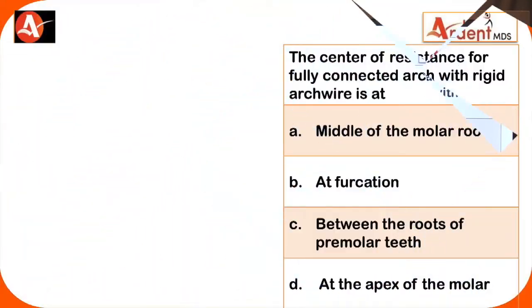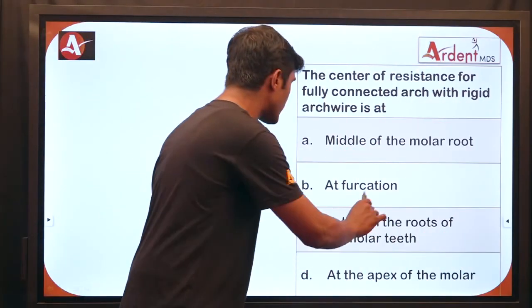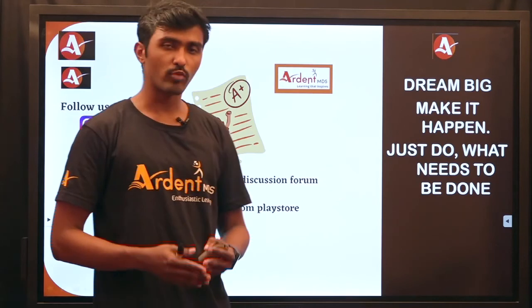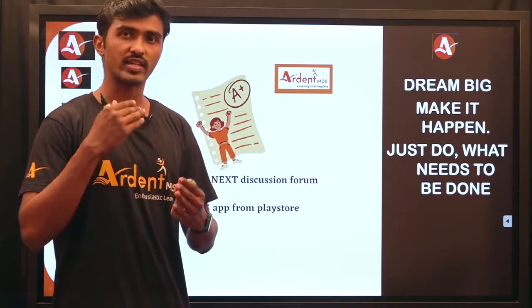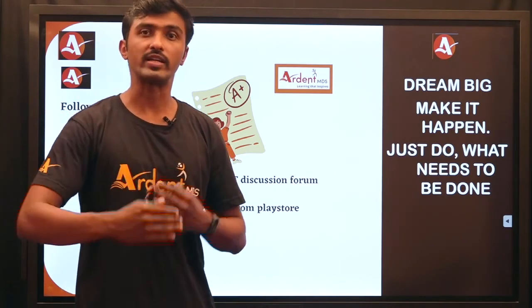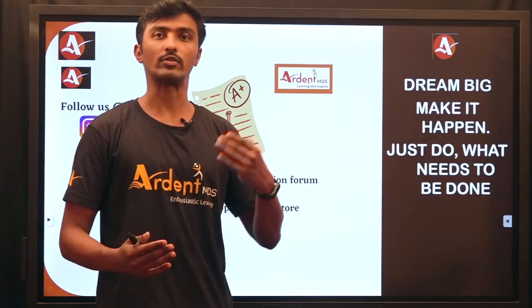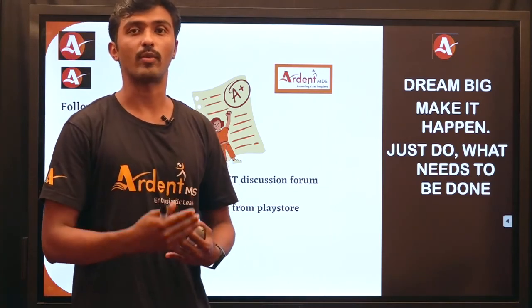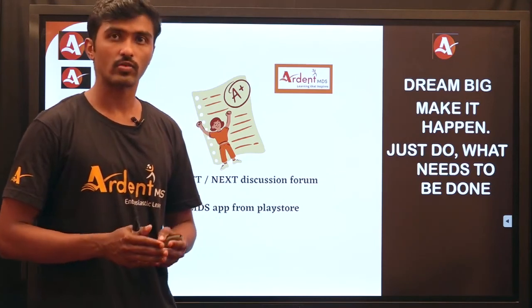Review question 4: The center of resistance for a fully connected arch — where the entire arch has brackets and wires — is located between the roots of the premolar teeth. I hope this session was helpful. We covered the basics of biomechanics and the concept of center of resistance and its location for different teeth — single-rooted and multi-rooted. In upcoming sessions, we will cover different types of forces in biomechanics and the moment-to-force ratio. Thank you and happy learning!